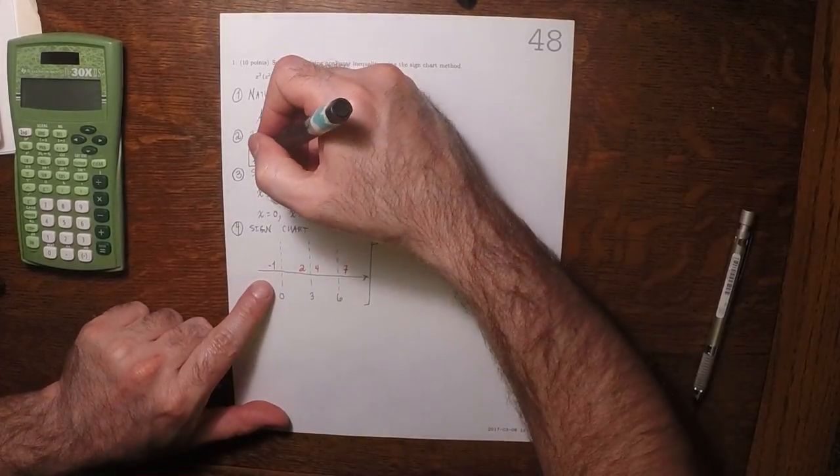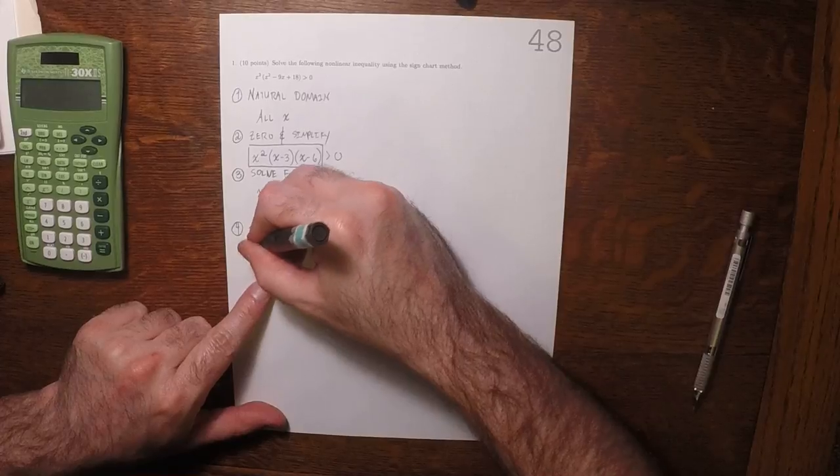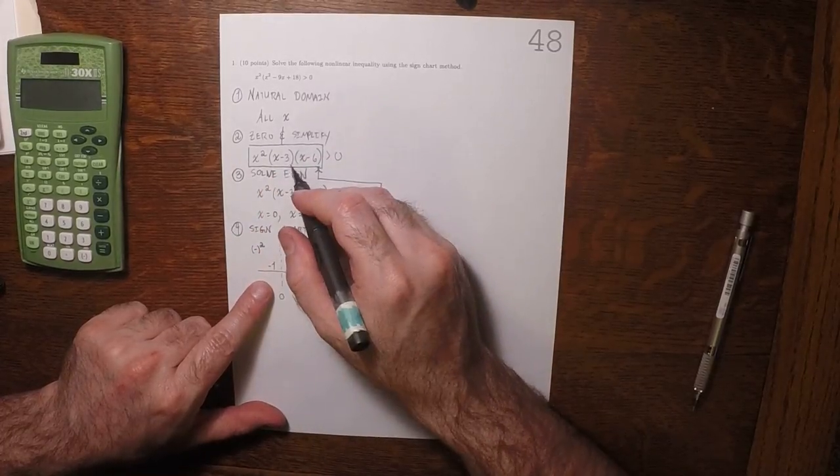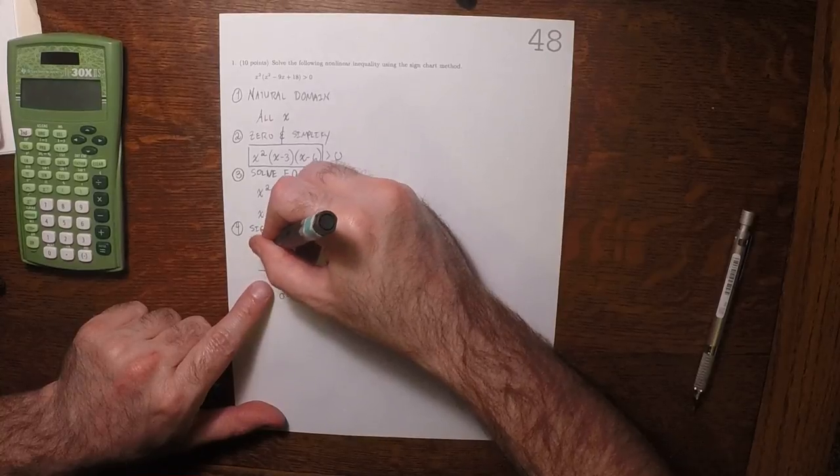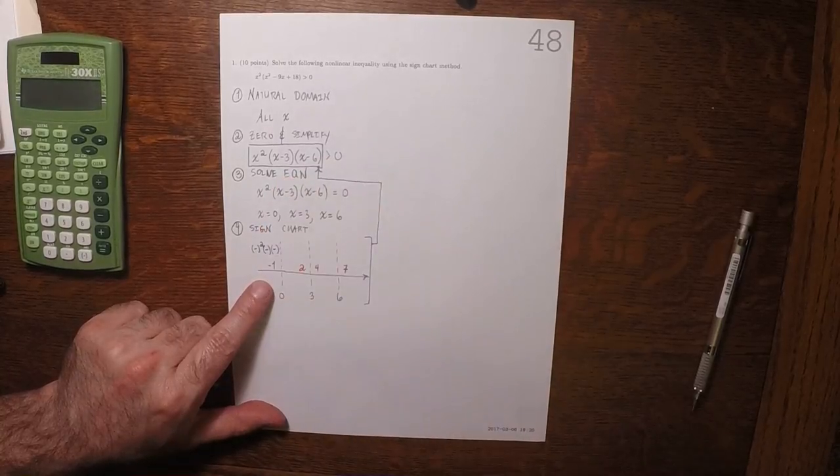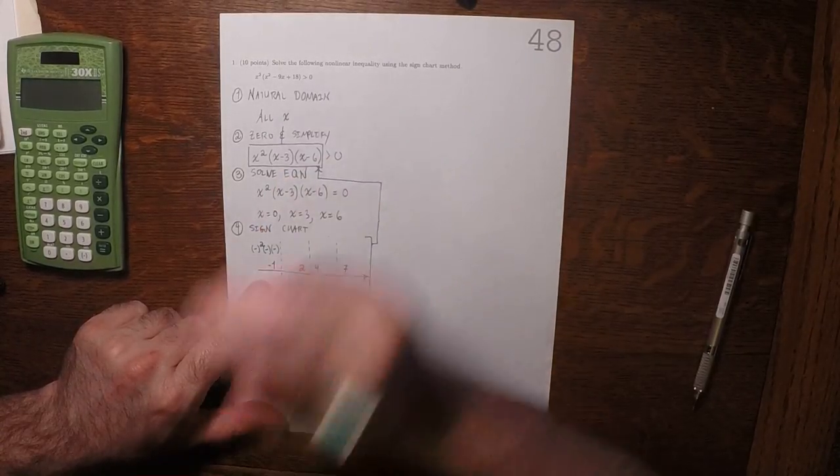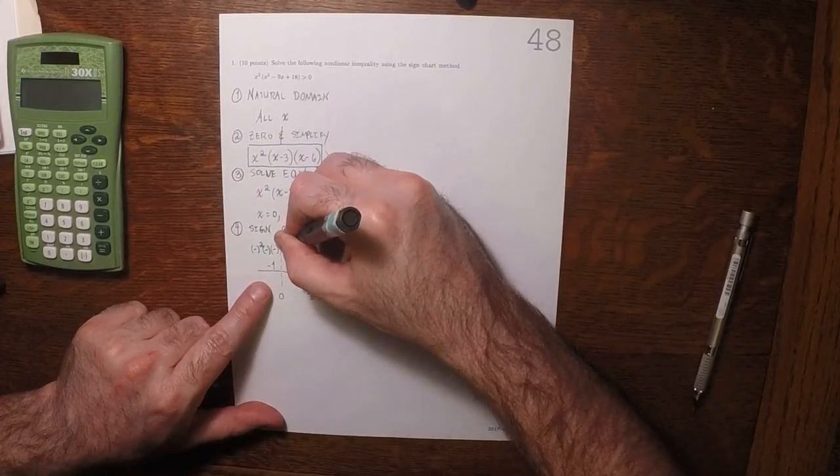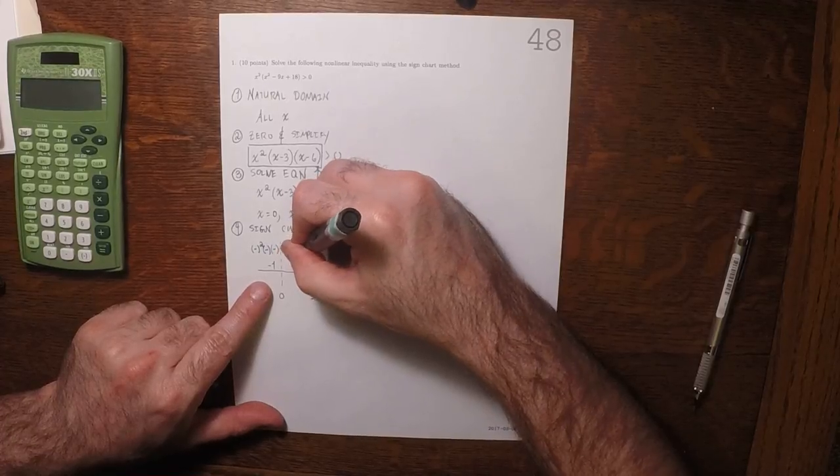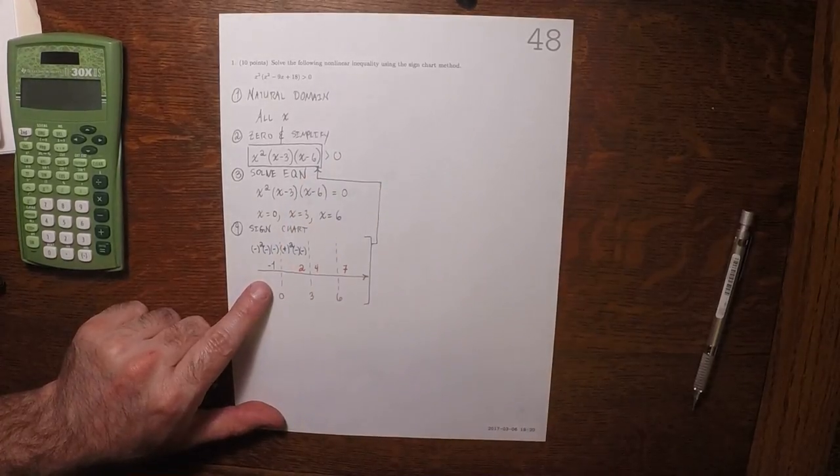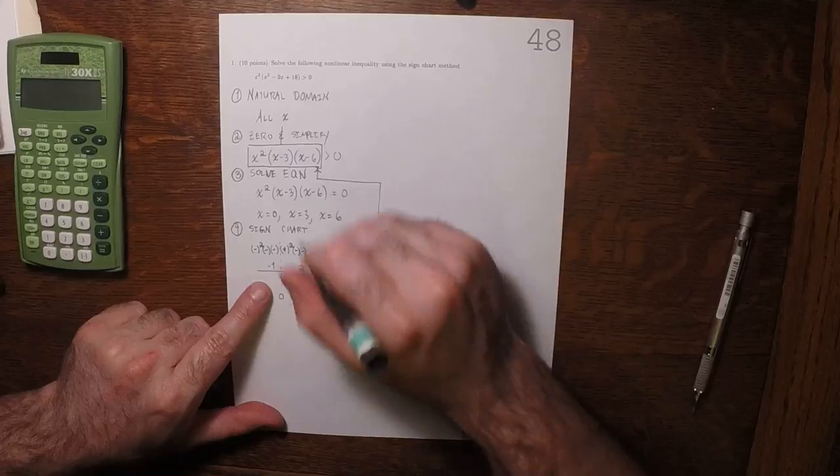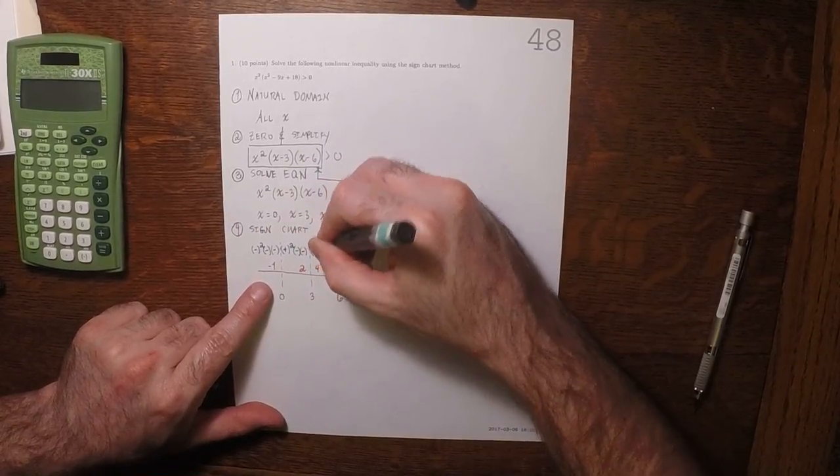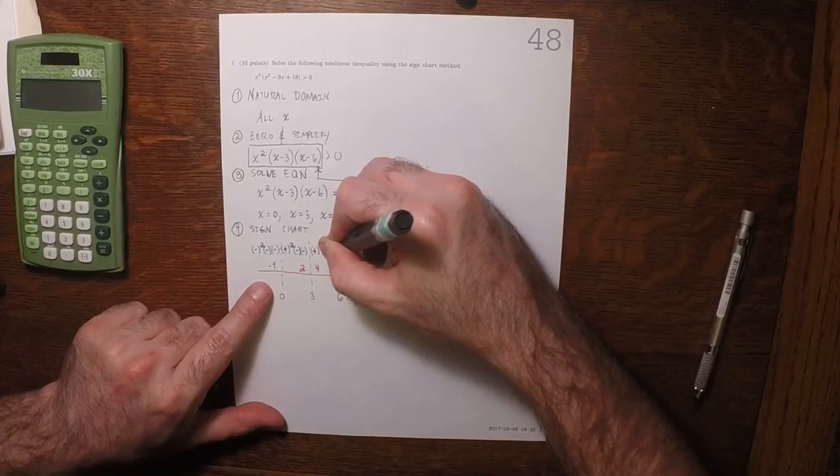So, if we plug in negative 1, that would be negative, and then squared, and plug in negative 1 there, that would be negative, and then negative. So, if we plug in 2, that would be positive, squared, and then negative, and then negative. If we plug in 4, that would be positive, squared, and then positive, and then negative.